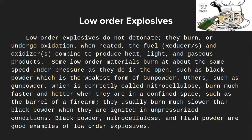Moving on to low-order explosives: low-order explosives do not detonate — they burn, or undergo oxidation. When heated, the fuel reducers and oxidizers combine to produce heat, light, and gaseous products. Some low-order materials burn at about the same speed under pressure as they do in the open, such as black powder, which is the weakest form of gunpowder.